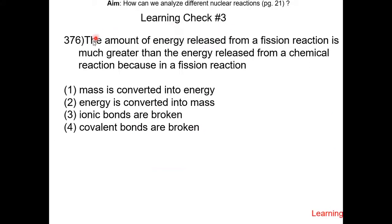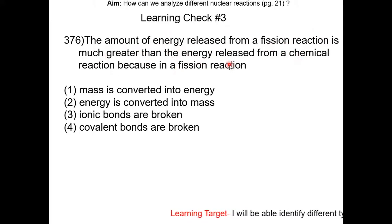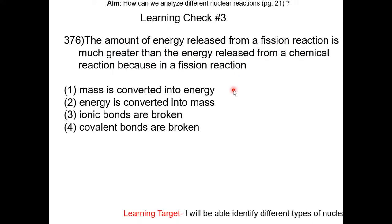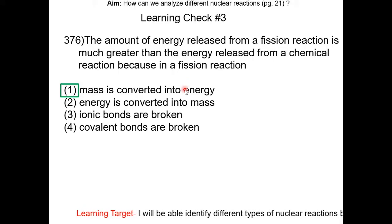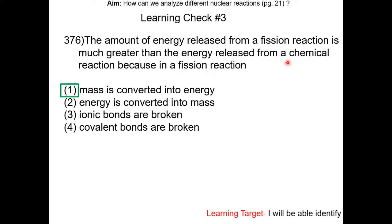Learning check number 3: the amount of energy released from a fission reaction is much greater than the energy released in a chemical reaction because a fission reaction does what? Pause the video and resume when completed. The answer is choice 1 — mass is converted to energy, so a nuclear reaction like fission releases a lot more energy than a chemical reaction.